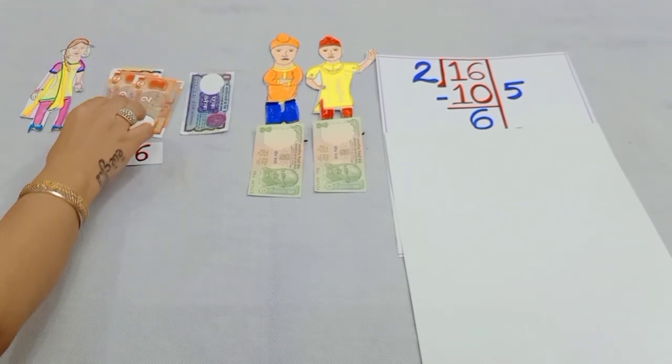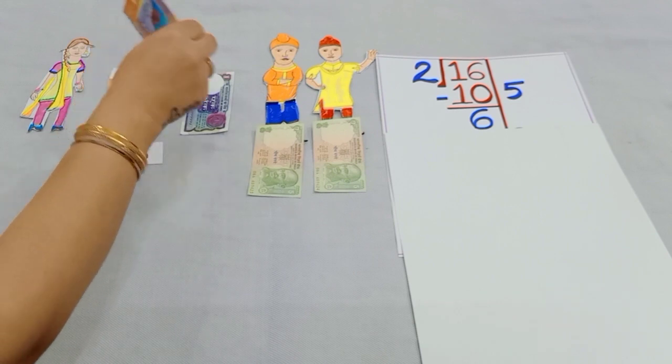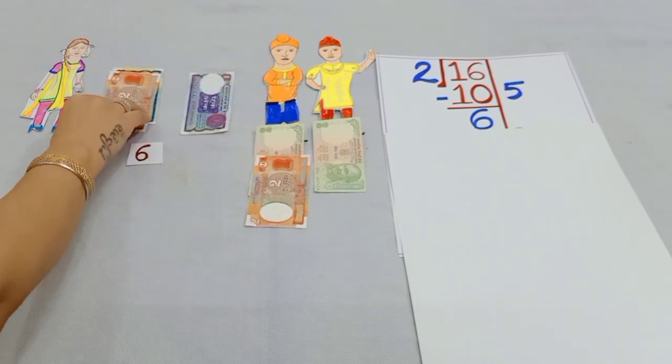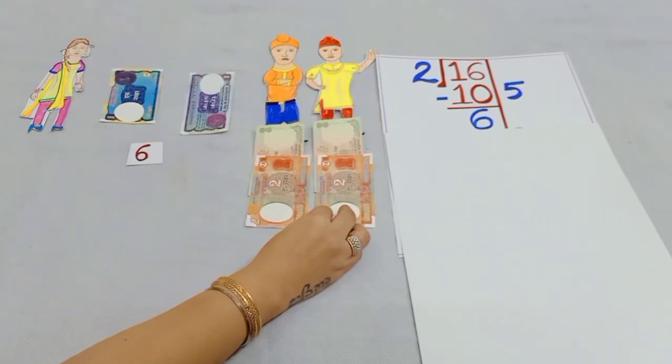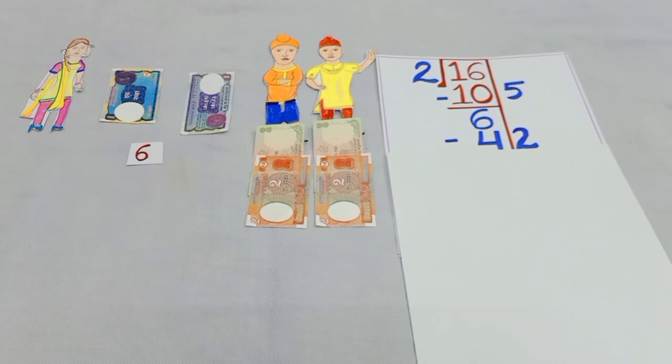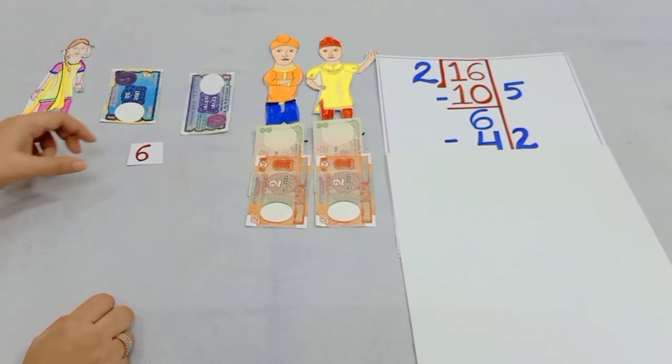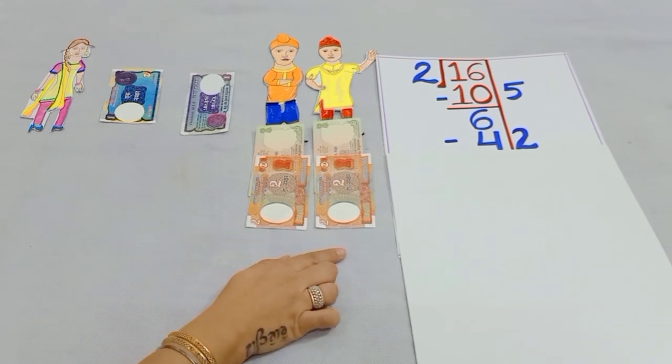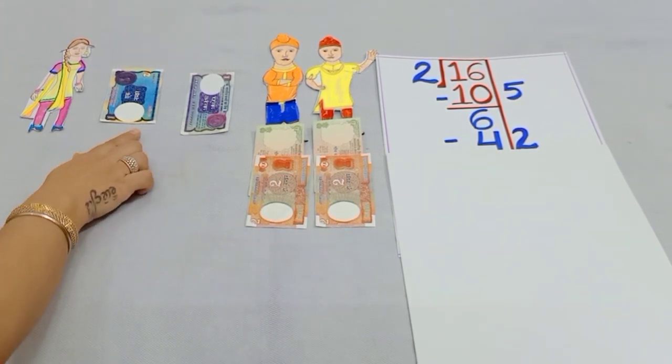Now, she will divide one one note of rupees 2 to her each brother. That means, she has divided rupees equally between her two brothers. That means, two twos are 4. So, my dear students, after dividing two two rupees between her two brothers equally,